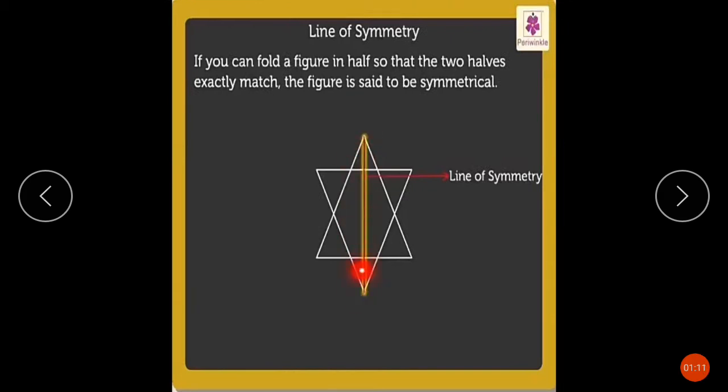So this line is called line of symmetry. تو ہم اس لائن کو کیا بولتے ہیں? Line of symmetry. ٹھیک ہے، the fold line is called the line of symmetry.